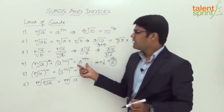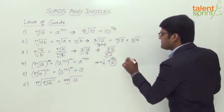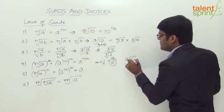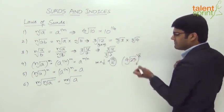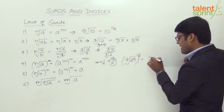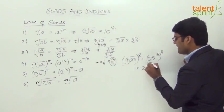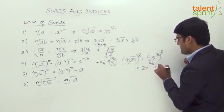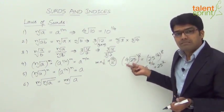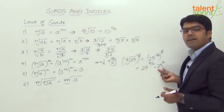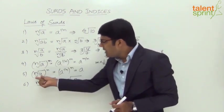For example, the 4th root of 25, raised to the power of 8, can be taken as 25 to the power of 1 by 4, whole to the power of 8. This simplifies to 25 to the power of 8 by 4, which equals 25 squared. So what looks like a complex term — the 4th root of 25 raised to the power of 8 — simplifies using this law to 25 squared, which is 625.